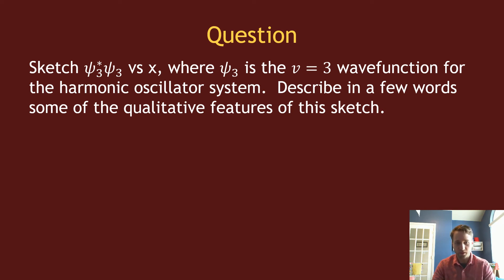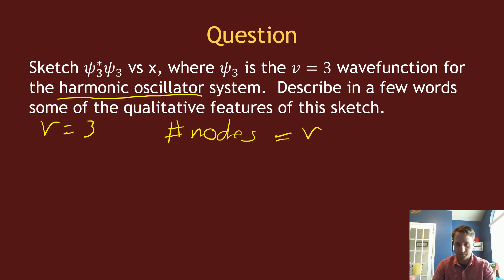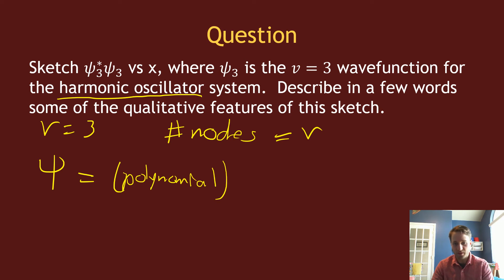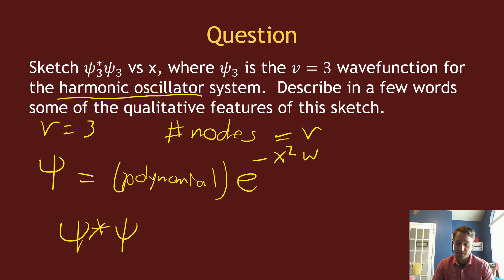The next problem is to sketch the wave function for the simple harmonic oscillator with quantum number v = 3, but here we're plotting ψ*ψ, which will be positive everywhere. The number of nodes for the simple harmonic oscillator equals the quantum number, so v = 3 means three nodes. The general form is a polynomial times a Gaussian e^(−x²) factor.